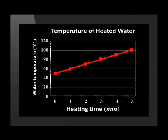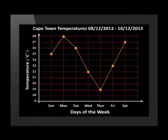Our next type of graph is the line graph. This graph shows the increase in the temperature of water over time. Once again, we have a title and the axes are labeled. The points on the line indicate where the temperature of the water was measured. The line is drawn to connect the dots and provide an estimate of the temperature. This broken line graph shows the change in temperature in Cape Town over a period of a week. We can see that Thursday was the coldest day of the week.